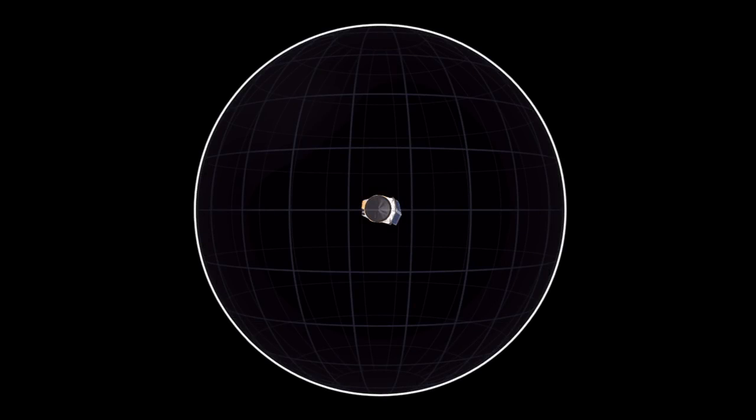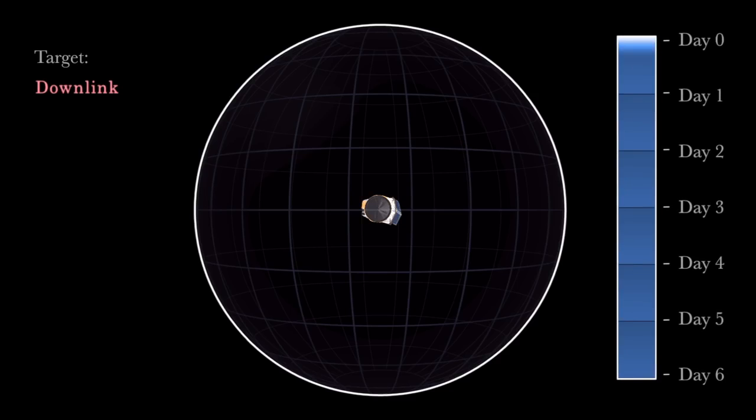This is a simulated view of Spitzer as it would look from Earth while its radio dish is pointed at us, transmitting its collected data and receiving new instructions. Spitzer then pivots around, looking at its targets in the sky.